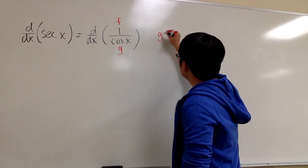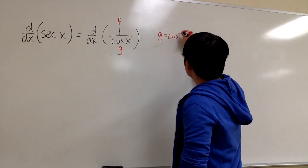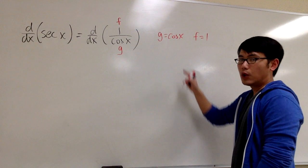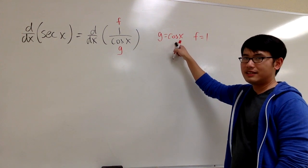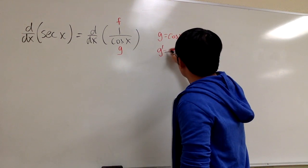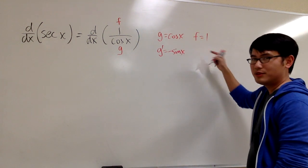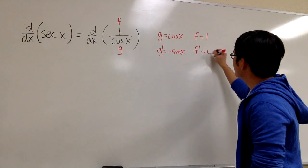Let me put this on the side. Okay, g is equal to cosine x, and then f on the top is equal to 1. What's the derivative of cosine x? It's negative sine x, right? And what's the derivative of 1? It should tell me 0. So f' is equal to 0.